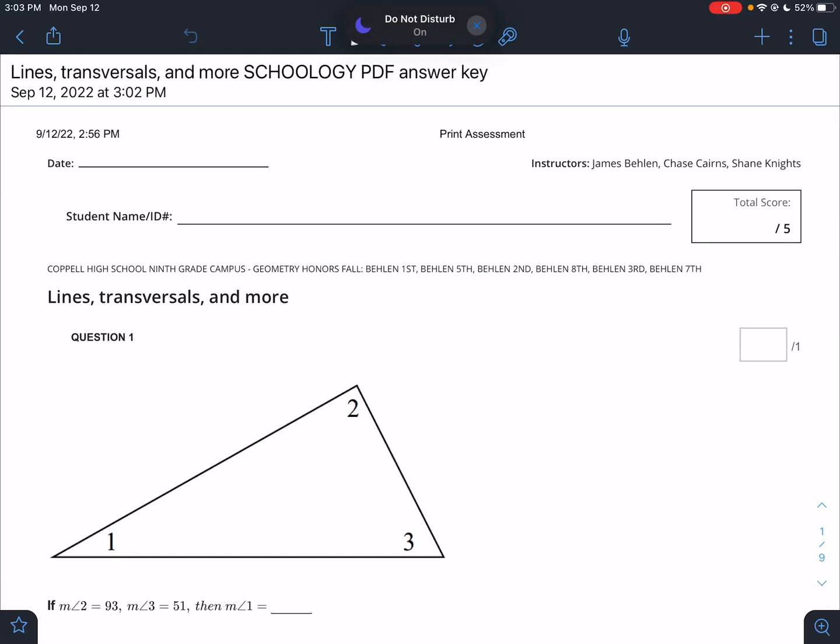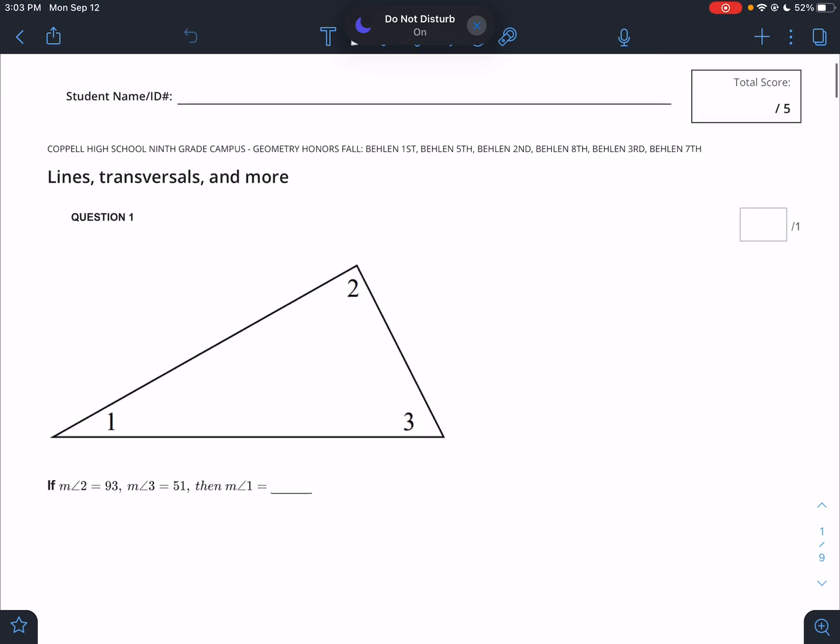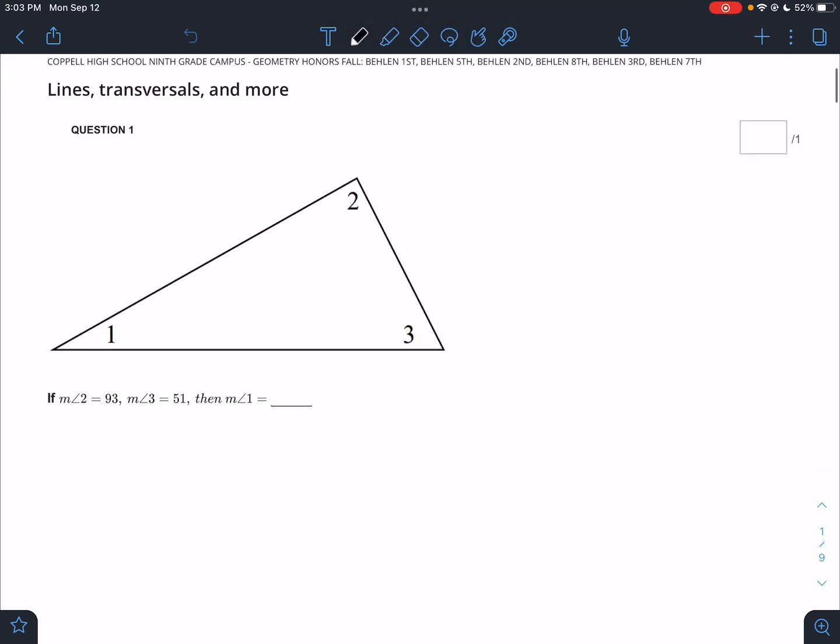All right guys, I'm working on the lines, transversals, and more Schoology assignment. Hopefully this will help you get through it. First picture, we just have a triangle. How many degrees are in a triangle? We know they have to add up to 180 degrees. Angle 2 is 93, angle 3 is 51. So it's 180 minus 93 minus 51, and I get 36 degrees. Not much to that one.